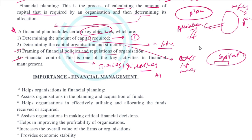You also need to have financial control over how activities are carried out in financial management. When creating a financial plan, you need to keep all these things in mind — starting from the amount of capital required, ending with financial control.